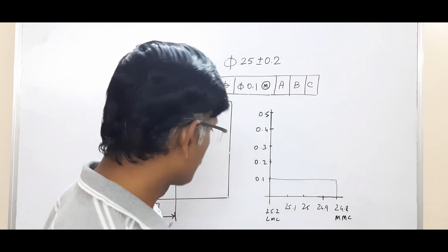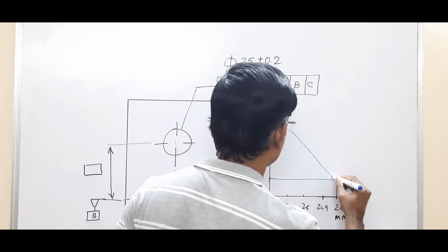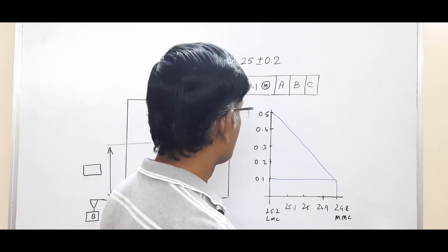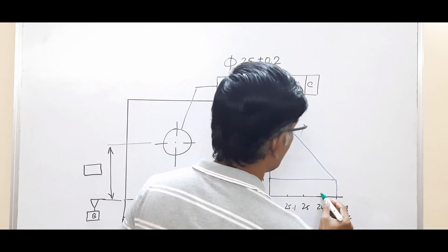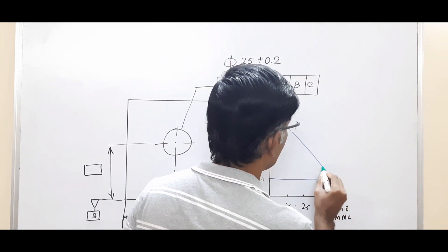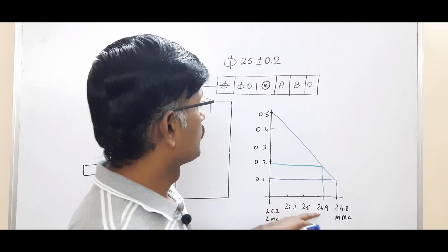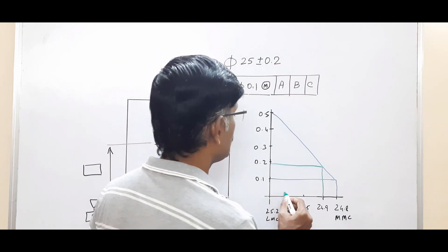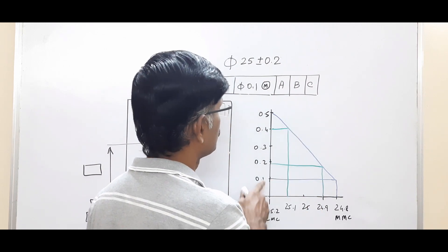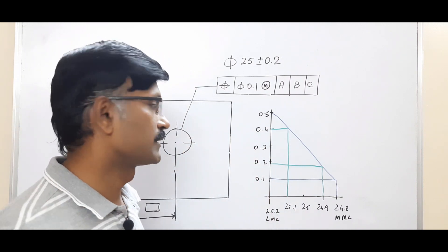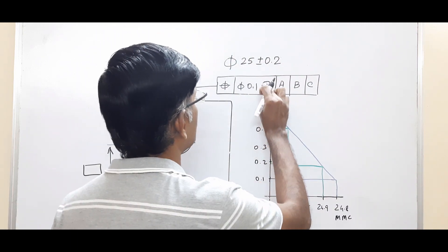Now let us see what happens if we add the maximum material condition modifier. For MMC, this base remains the same — I just join 0.5 to this end, creating a diagonal line. For example, if the hole is produced at 24.9, I draw a vertical line at 24.9 which meets the graph, then draw a horizontal line — the positional tolerance is 0.2. When the hole is produced at 25.1 it is 0.4, and when produced at 25.2 the maximum positional tolerance of 0.5 is given. This is the second condition with MMC.